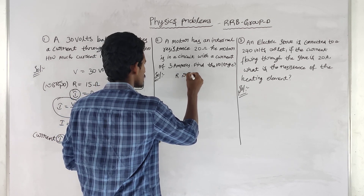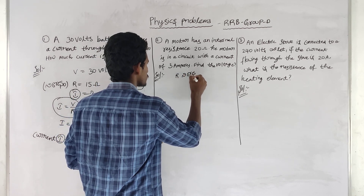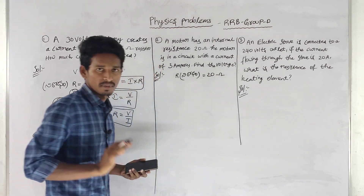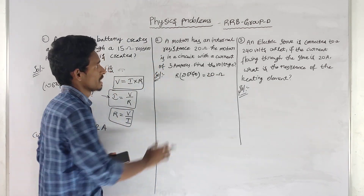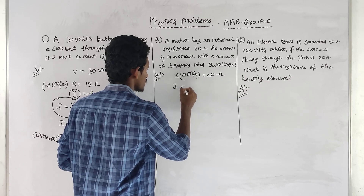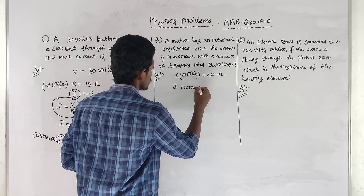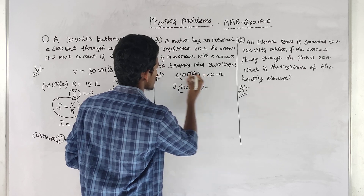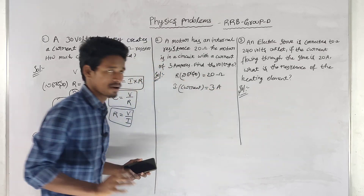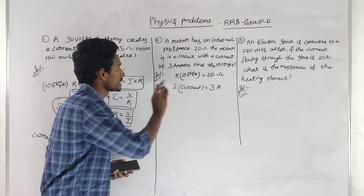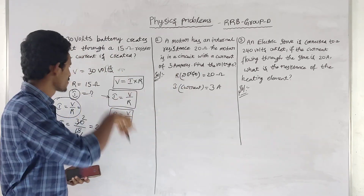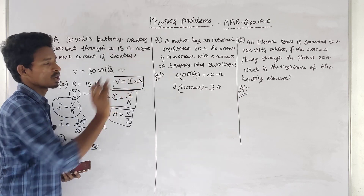The resistance is 20 ohms and the current is 3 amperes. We call it voltage. We find R and I.